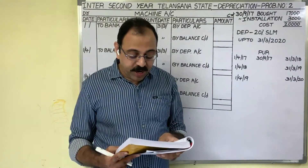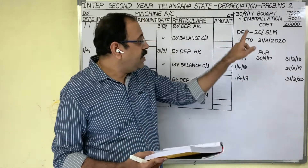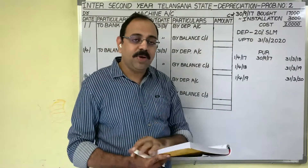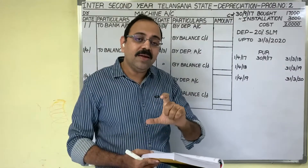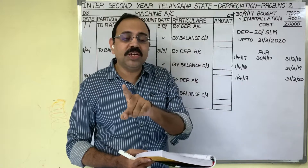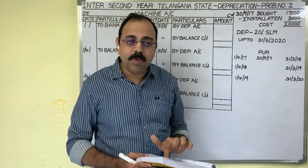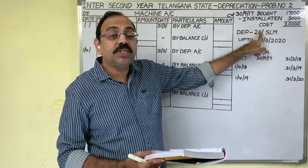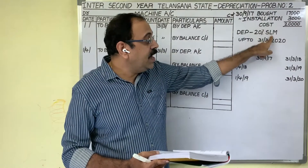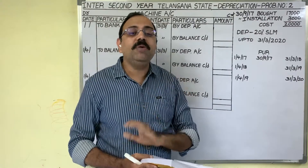Depreciation is provided at 20% under the straight line method. The rate of depreciation is directly given in this question. Recall the first problem — there we calculated the rate of depreciation using the formula: annual depreciation divided by cost, multiplied by 100. But in this second problem, only the rate of depreciation is given, calculated under the straight line (fixed installment) method.